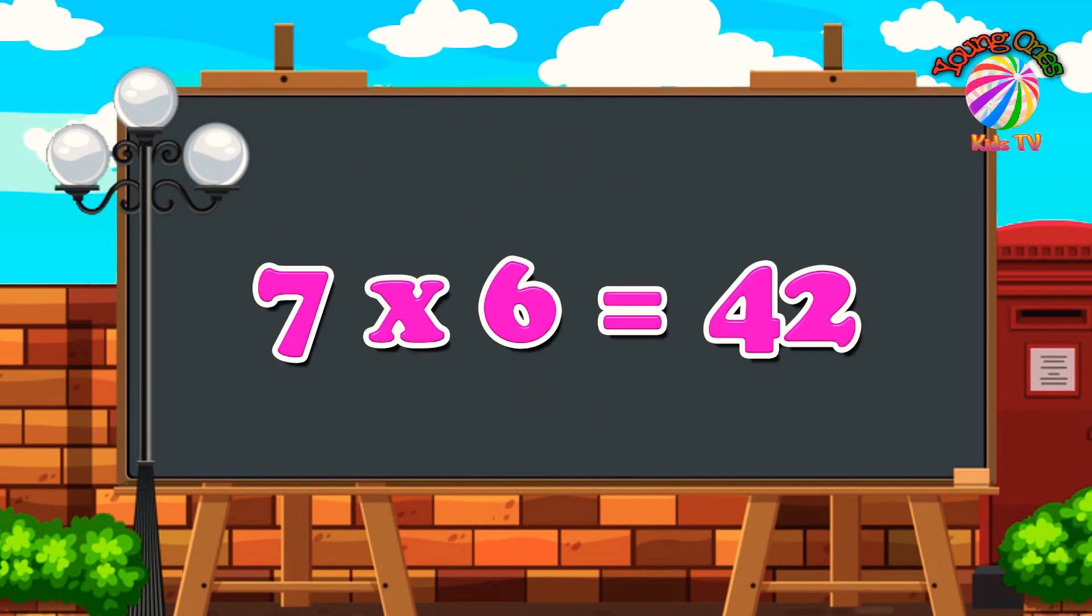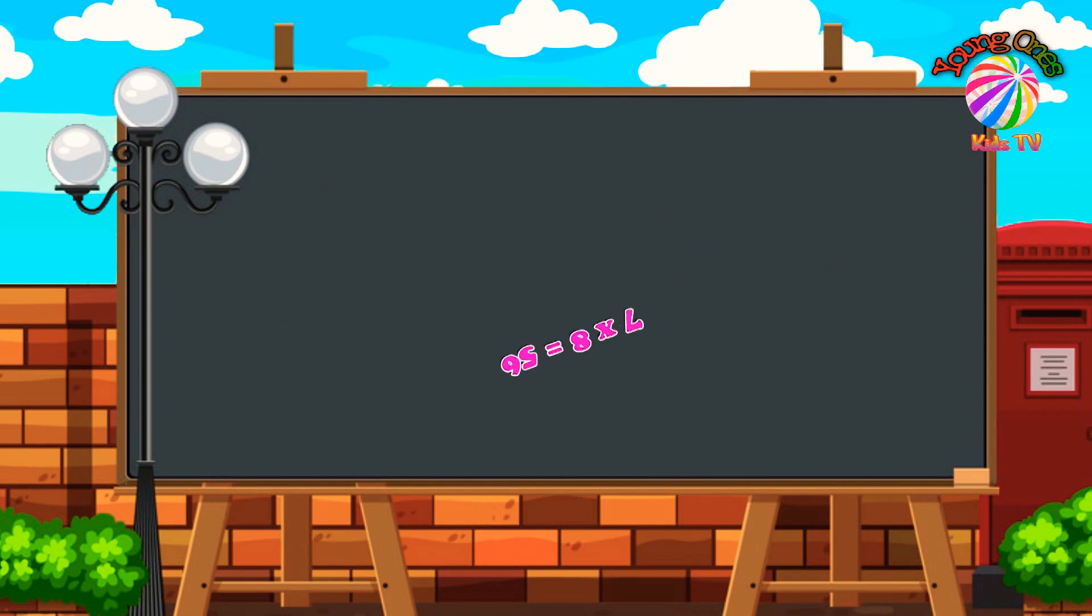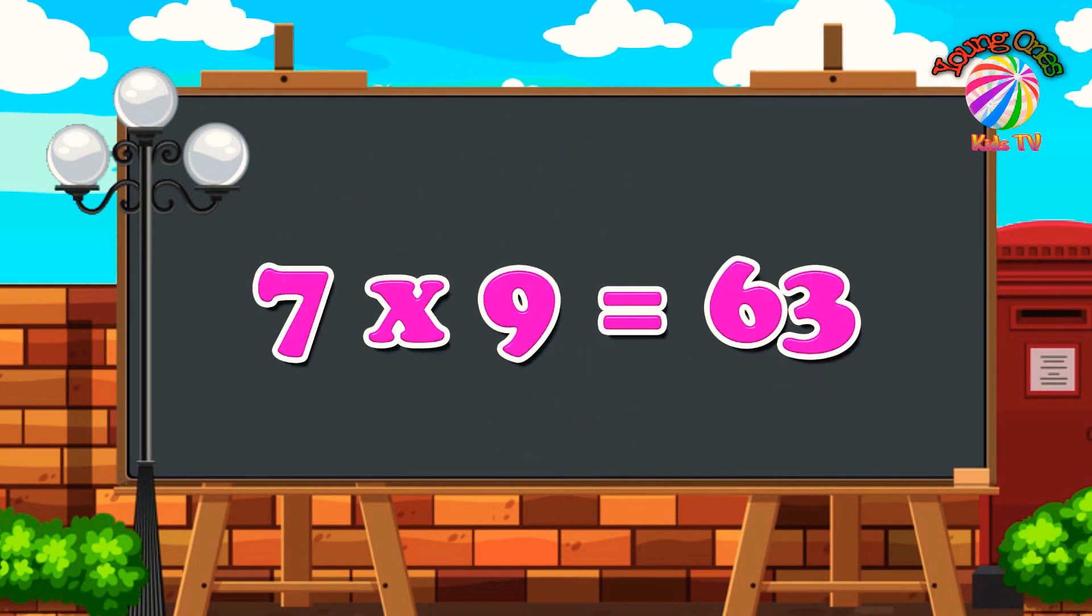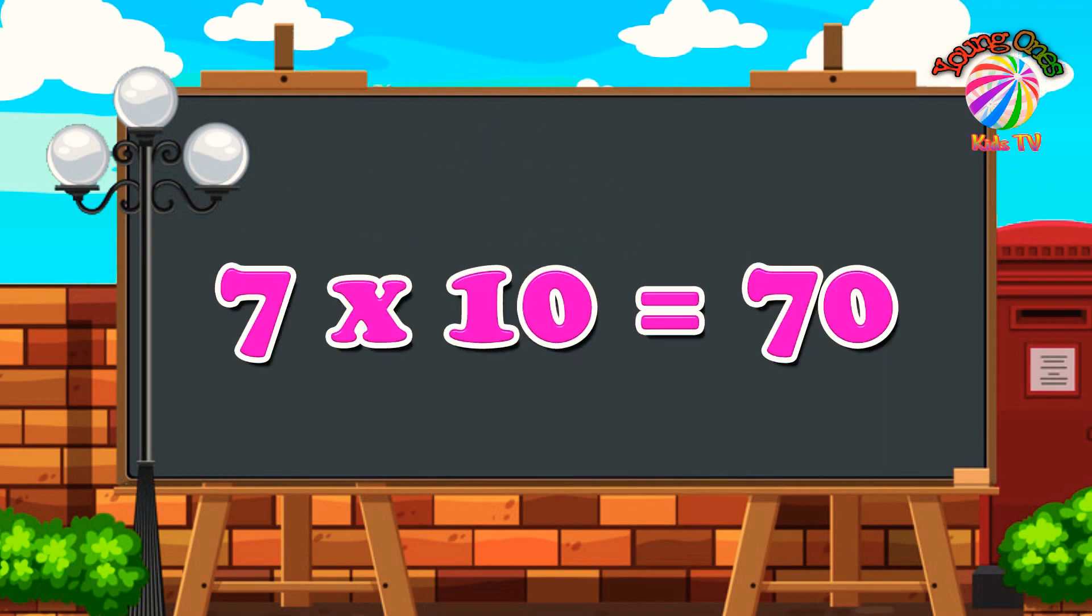7 times 6 equals 42. 7 times 7 equals 49. 7 times 8 equals 56. 7 times 9 equals 63. 7 times 10 equals 70.